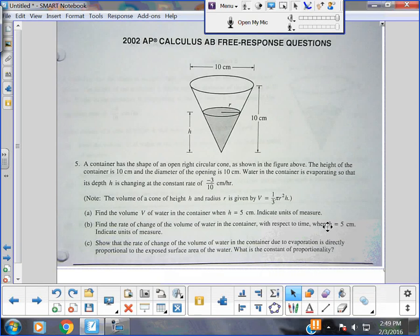So we have a practice AP problem, 2002 AB, number 5. It's a related rate problem. You have a cylinder with water half full. The container shown is a right circular cone. The height is 10, that's shown on the side. The diameter is 10, shown on top. Water in the container is evaporating, so its depth is changing at negative 3 tenths of a centimeter per hour.